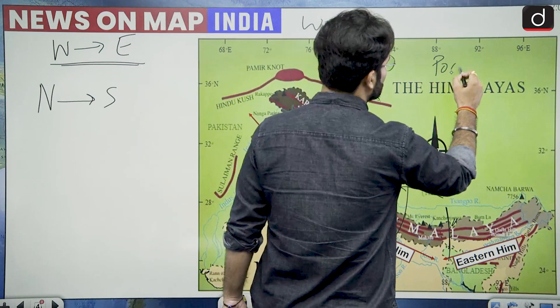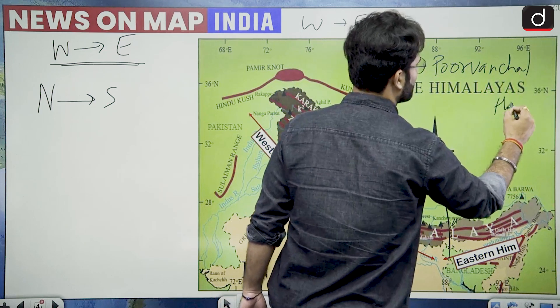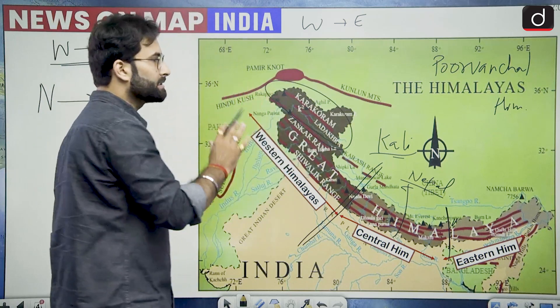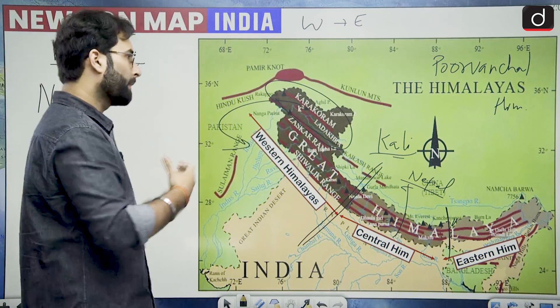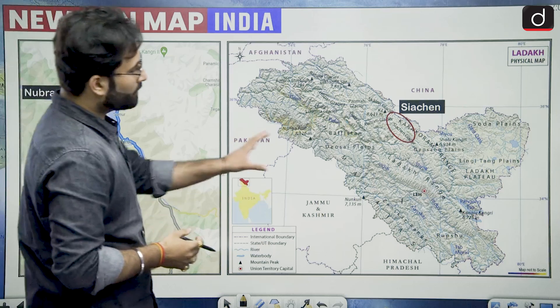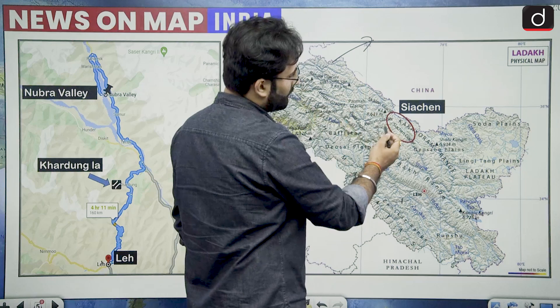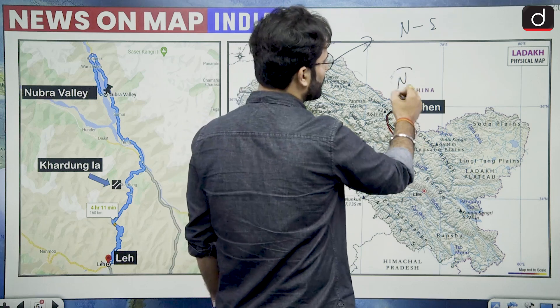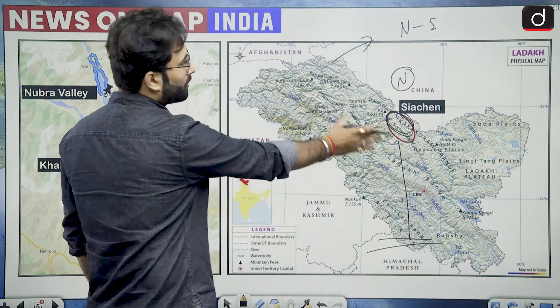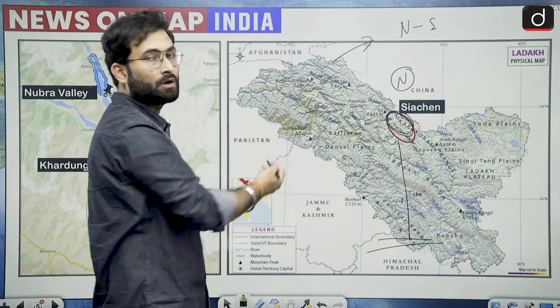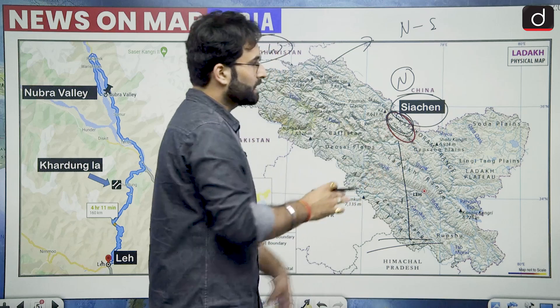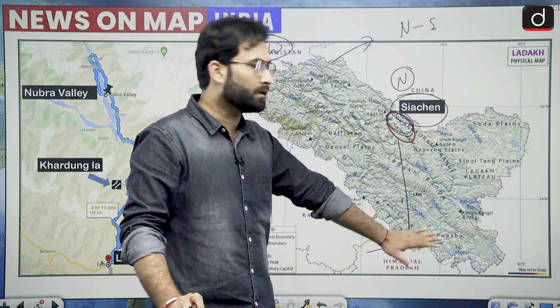We can also call them Purwanchal Himalayas. When we talk about the position of Ladakh, it is safe to say that Ladakh is in the western Himalayas. When we talk about the north to south expanse of Ladakh, we can say that Siachen forms the northern part and this part is basically your part of the greater Himalayas. Some part of Ladakh is even beyond Siachen in the northwest. It is safe to say that Siachen forms the northern part and the southern part is in the greater Himalayas.